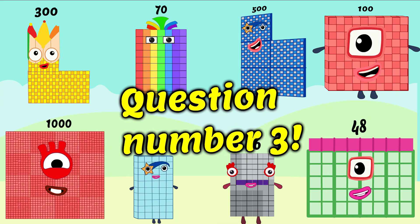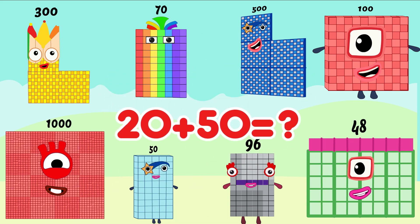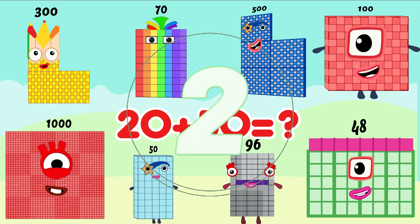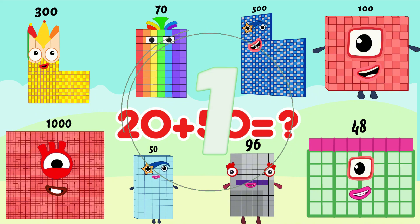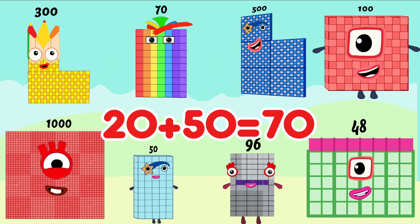Question number 3. 20 plus 50 is equal. Is correct answer. 20 plus 50 is equal 70.